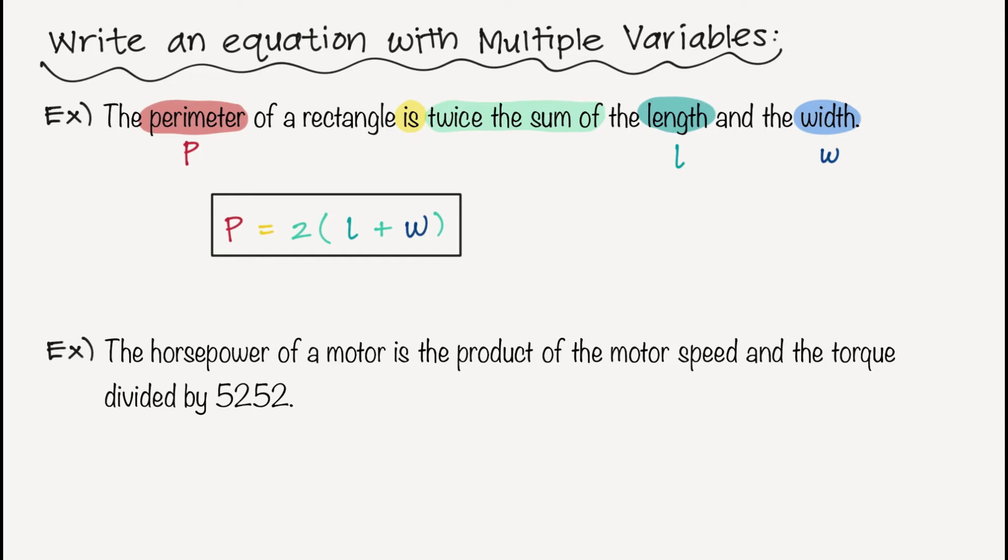The horsepower of a motor. So horsepower is typically an uppercase H. It is the product of the motor speed. So motor speed is normally a capital M. And the torque. So torque is normally a capital T. And all of that is going to be divided by 5,252.